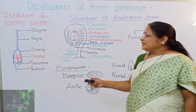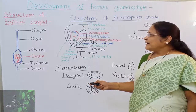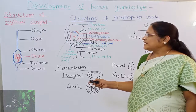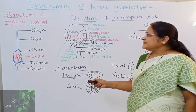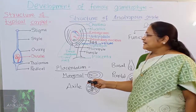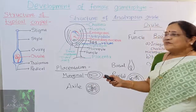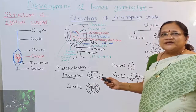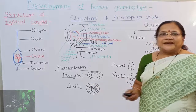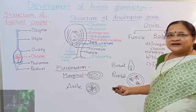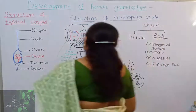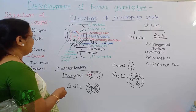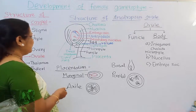Inside the ovary we get the presence of ovules. The ovule is attached to a cushion-like structure called the placenta. The body of the ovule is connected by a stalk called the funicle. Placentation is the arrangement of ovules on the placenta, and in angiosperms you get different types. For example, in marginal placentation, the placenta is at the margin, from which you get the funicle and the ovule.